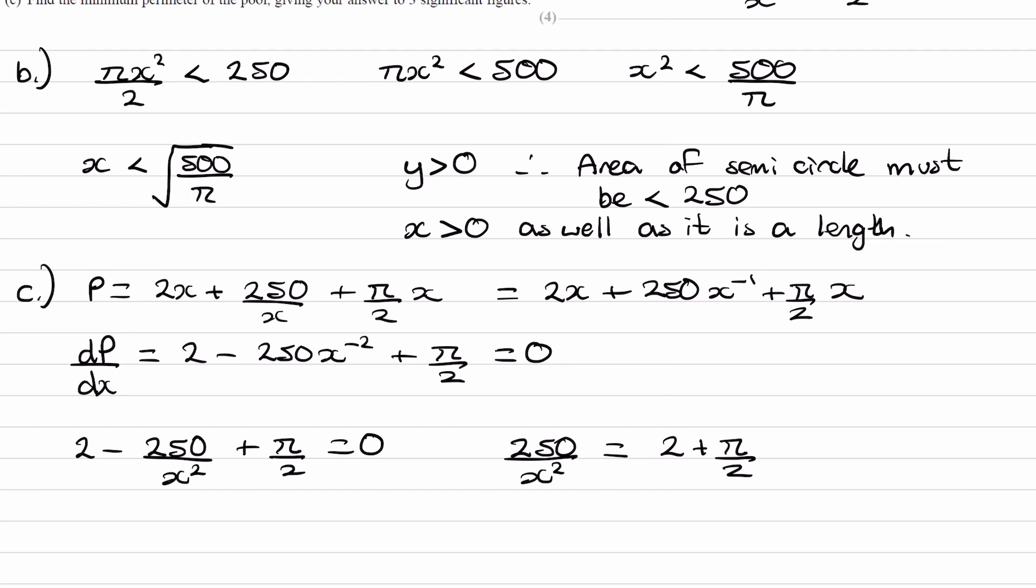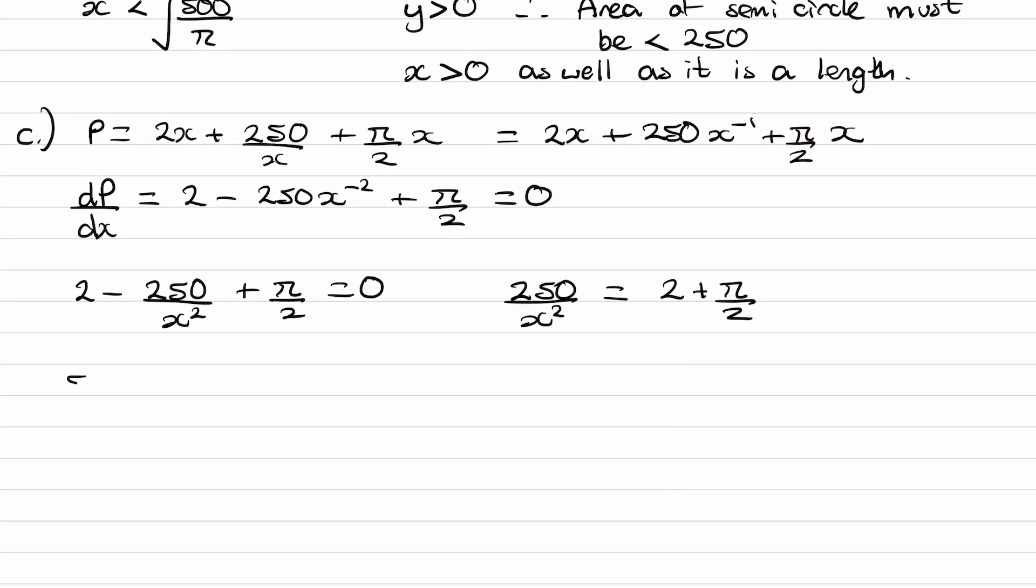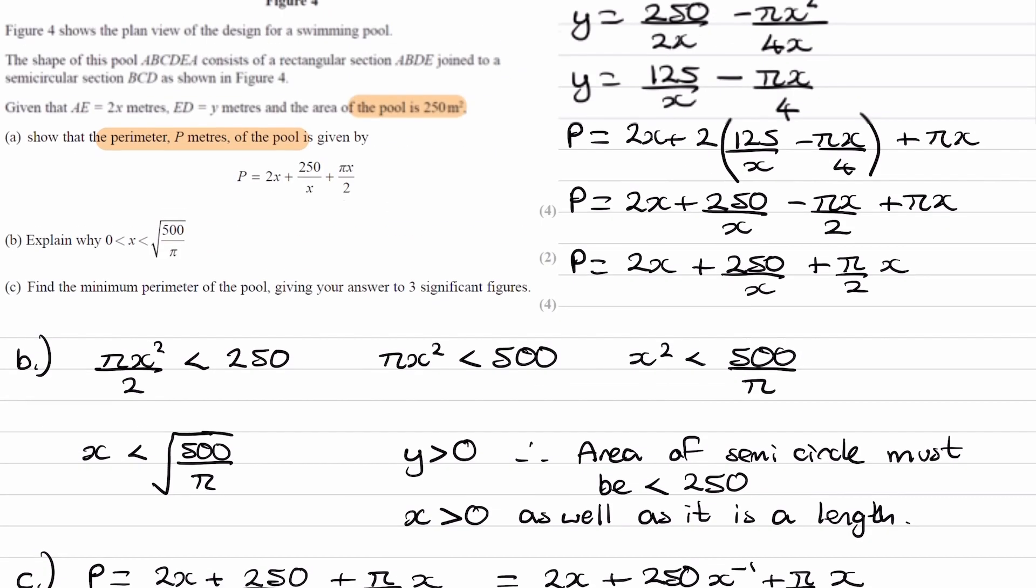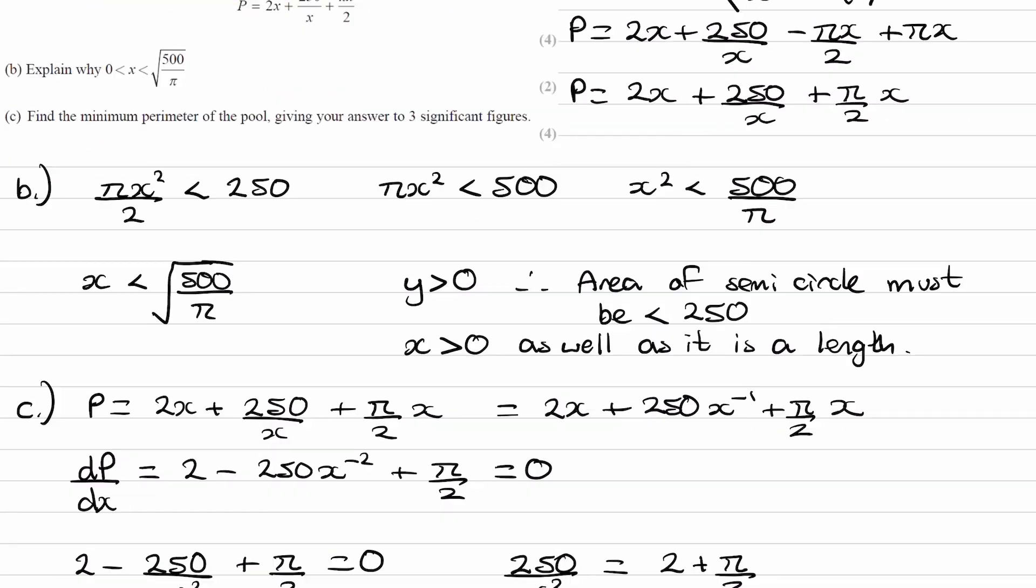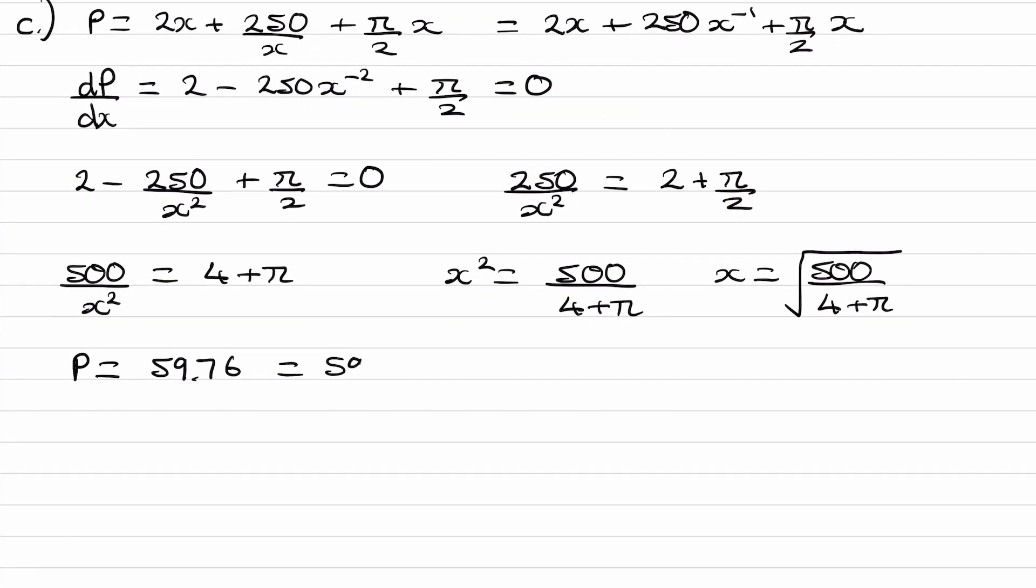I'll rewrite this so we have 2 - 250/x² + π/2 equals 0. I'll rearrange for the 250/x². To simplify the fraction on the right-hand side, I'll times everything by 2. So we end up with 500/x² equals 4 + π. And then I will switch these around. x² equals 500/(4 + π). And finally square root. 500/(4 + π), which is whatever it is. And then we can sub that back into P, which gives us 59.76. The unit is meters. We want our answer to 3 sig figs as well. So our final answer would be 59.8 meters.